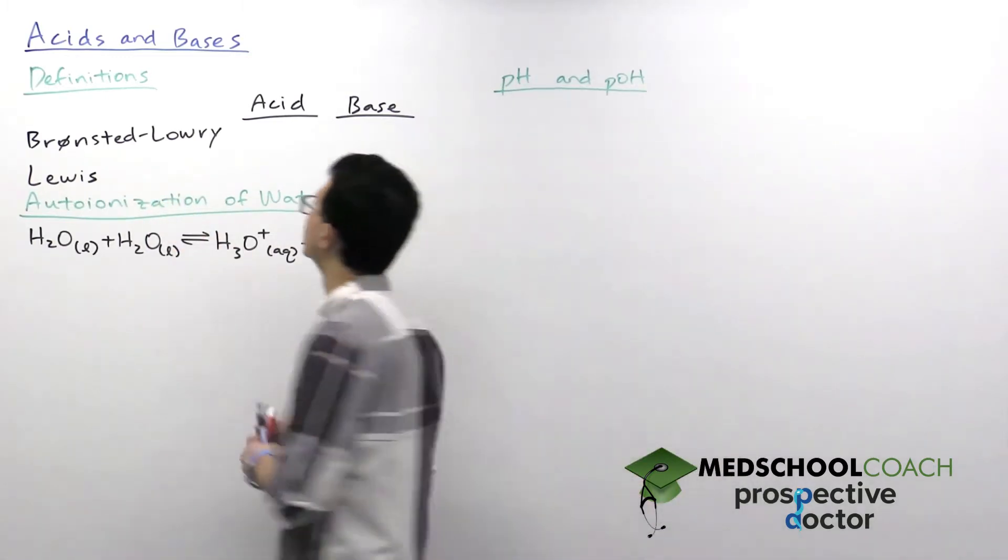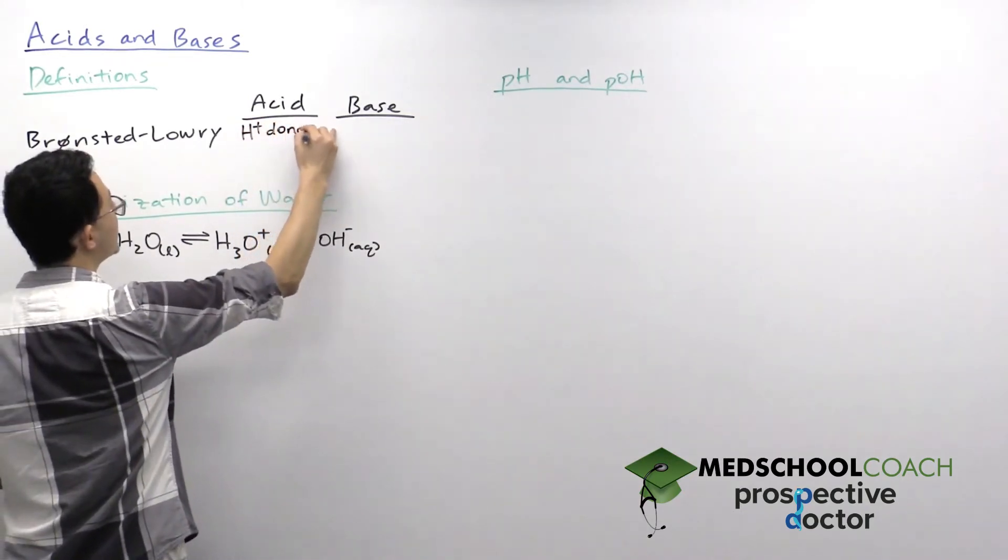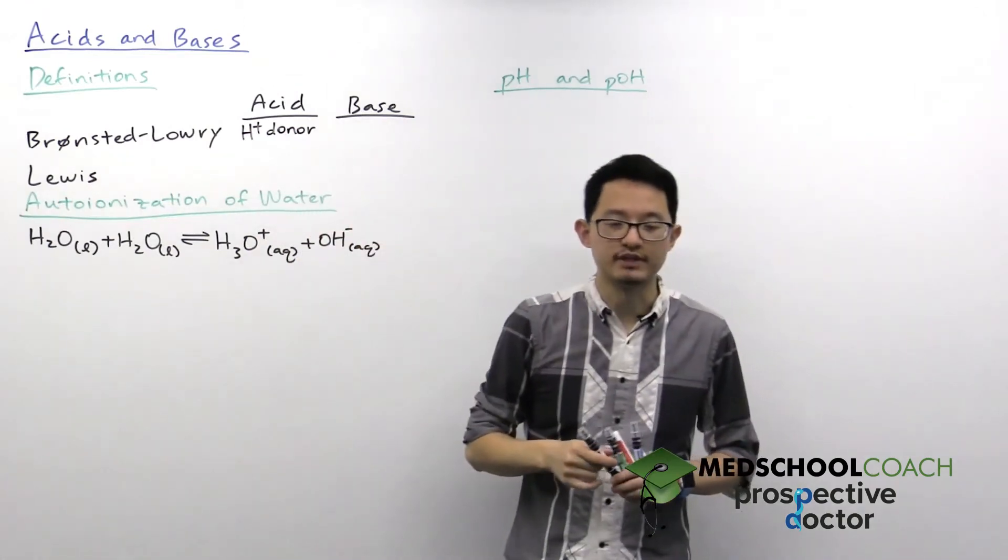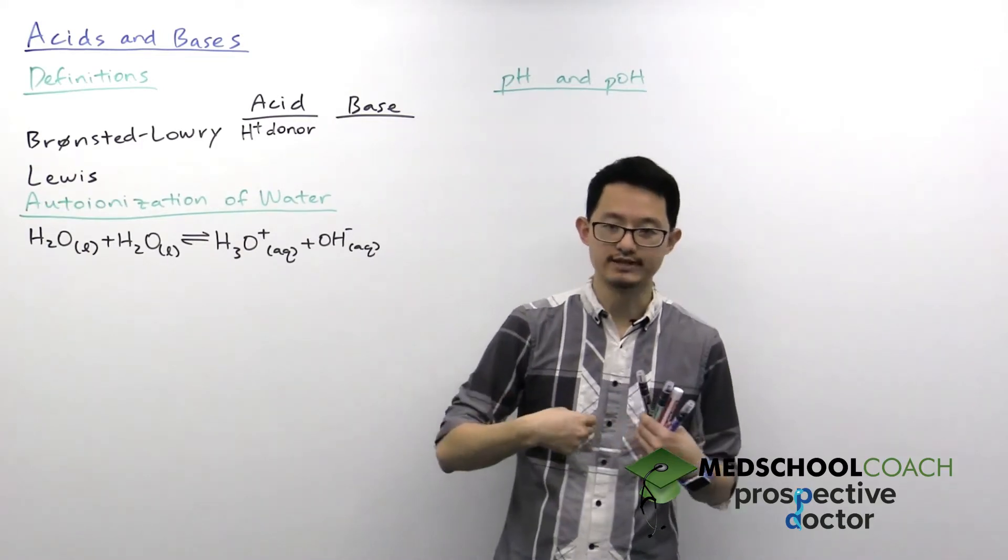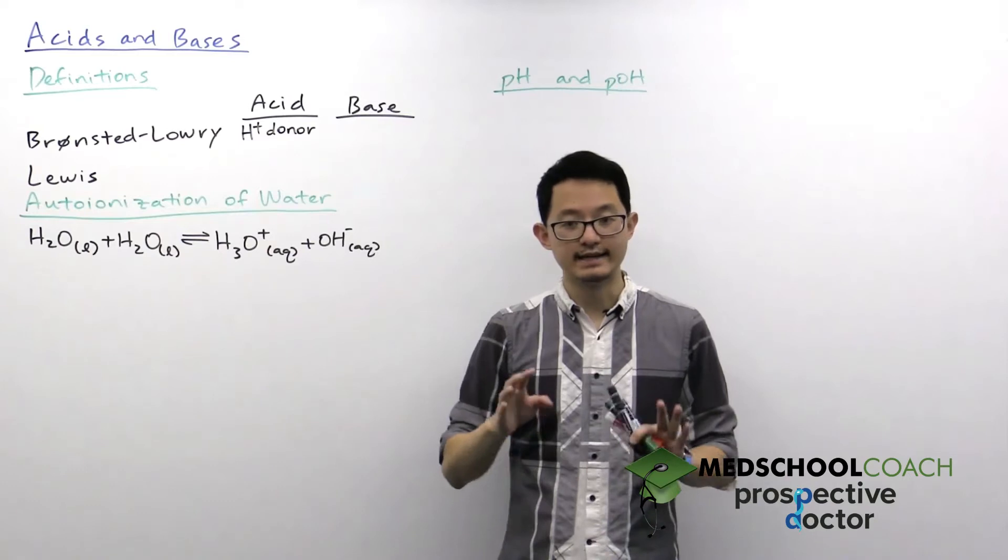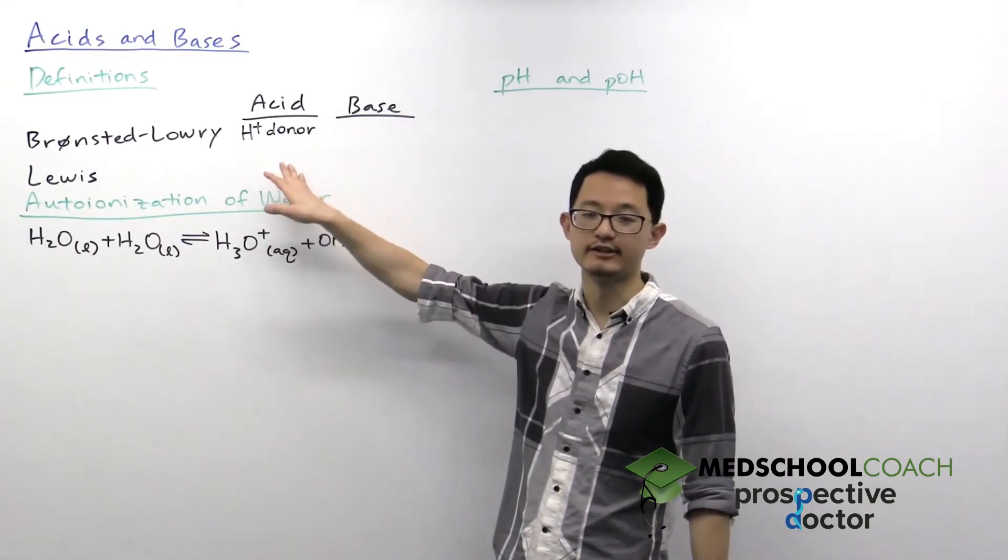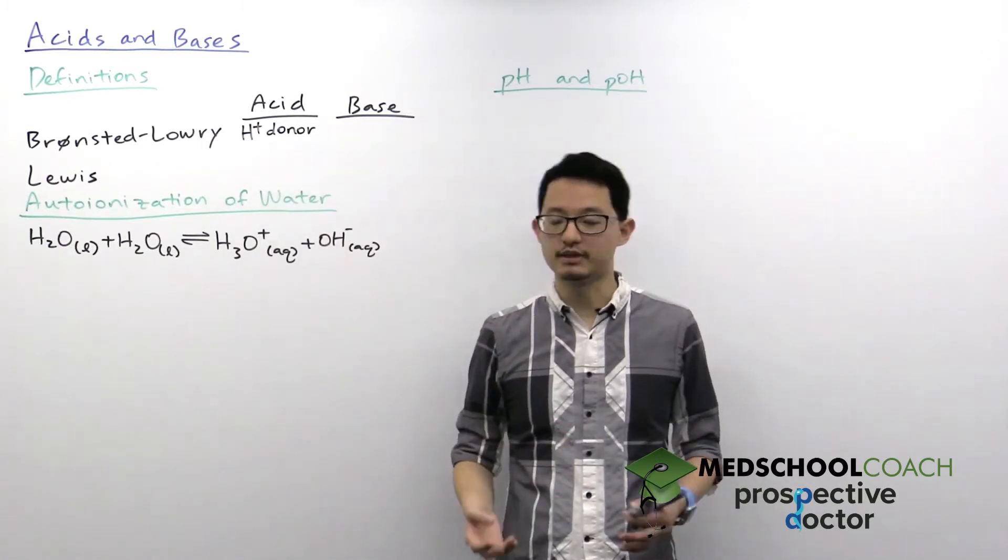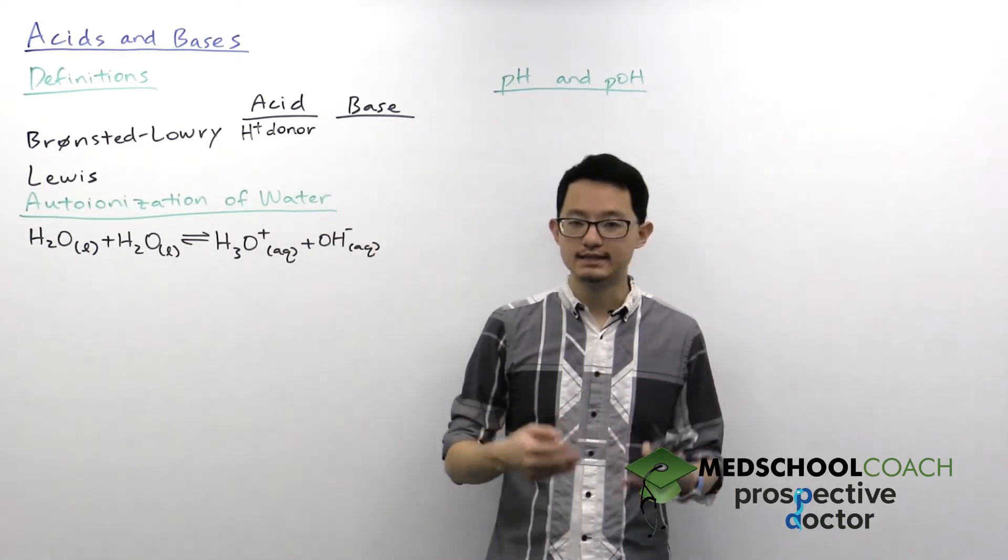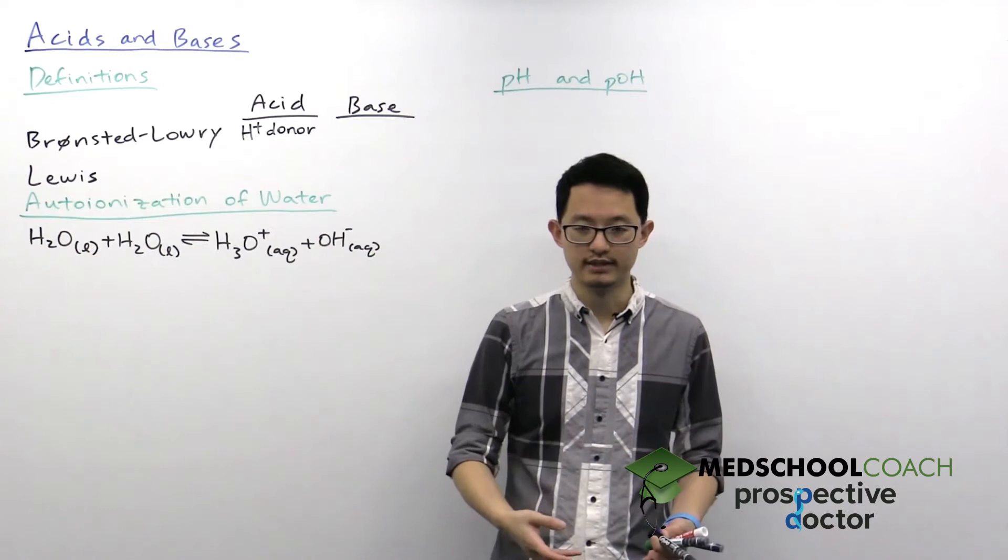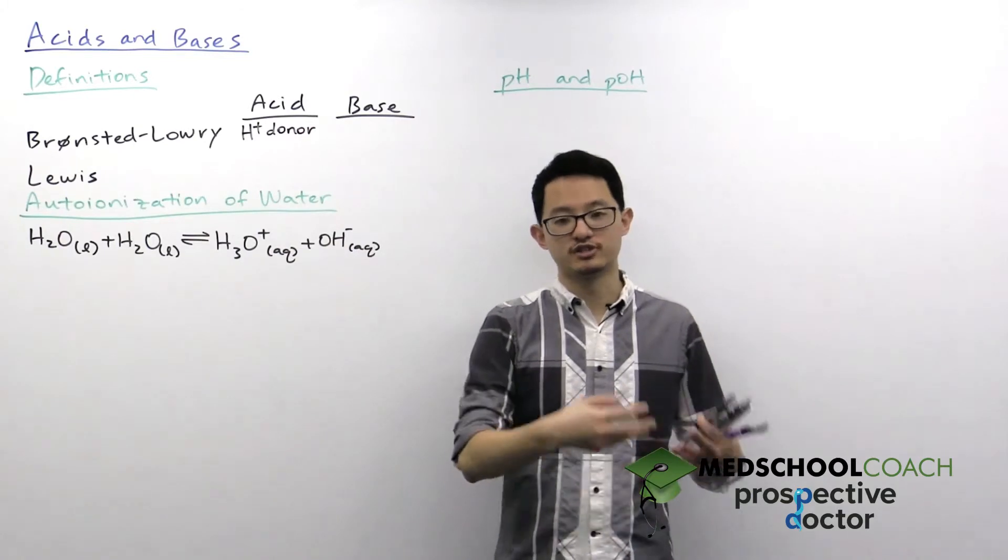Under the Bronsted-Lowry definition, an acid is called a proton donor. Now you need to be a little careful about this definition because when I say that an acid is a proton donor, I'm not talking about an atom taking a proton from its nucleus and flinging it out. Instead, it's more precise to say that you're actually donating a hydrogen ion. Remember, a hydrogen atom is just a proton and an electron. If you take an electron away, the hydrogen ion is literally just a proton. So that's what we mean. We're donating a hydrogen ion, which is just a proton.